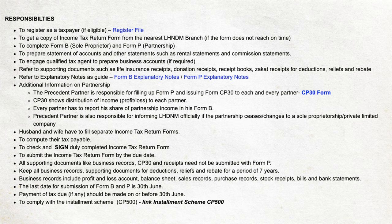To start off today's video, I would like to just quickly highlight your responsibilities for running a business as listed on LHDN's website. You will need to complete Form B for sole proprietors or Form P for partnership. You can engage a qualified tax agent to prepare business accounts if required. You need to compute your tax payable, which I've talked about in my previous video and I will cover more in this video as well. You will also need to keep all business records, supporting documents for deductions, reliefs and rebates for a period of 7 years. Produce and keep your business records — include profit and loss account, balance sheet, sales records.